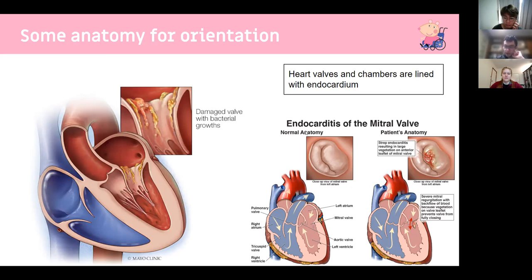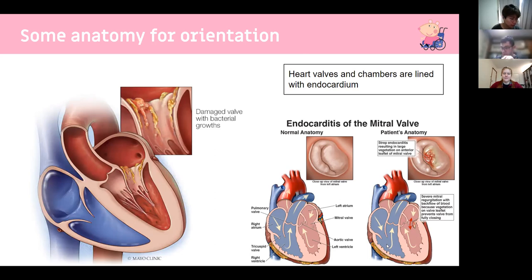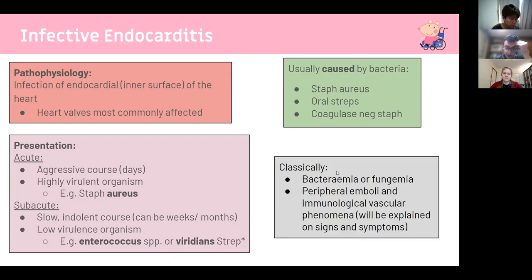Staph aureus from IV drug use enters the veins, gets caught at the tricuspid valve, and vegetates there. After growing, bacteria flick off into the circulation and into capillary beds throughout the body, causing clots in blood vessels and infarction — where the vessel is occluded, tissue is insufficiently perfused, and can die. The most commonly affected valve overall is the mitral valve. Vegetations look distinctly different in infected tissue.